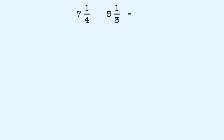Let's look at another example: 7 and 1 fourths minus 5 and 1 third. Remember, to solve the problem, we can first convert the mixed numbers into improper fractions. 7 and 1 fourths becomes 29 fourths, and 5 and 1 third becomes 16 thirds.